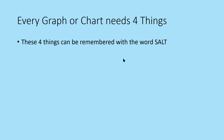Every graph or chart needs four things, remembered with the word SALT. S stands for Scale — going up the y-axis in the same quantity each time, for example 10, 10, 10, all the way up to the highest value. A stands for Axis — specifically the y-axis. L stands for Labels — both axes should be labelled, indicating frequency and the item being counted. T stands for Title — everything in the graph or chart should have a title.